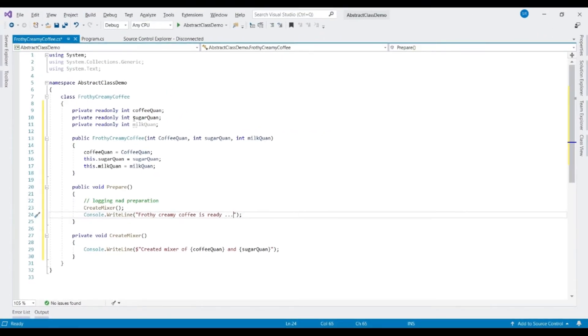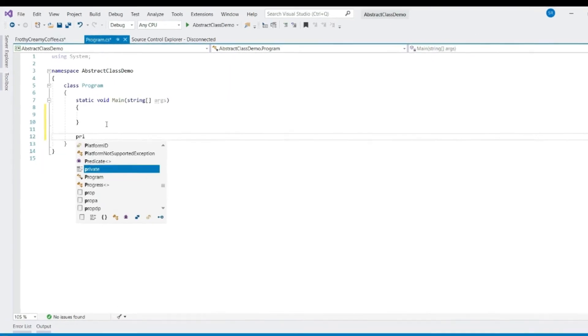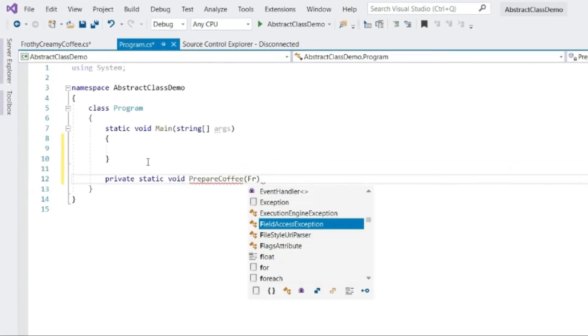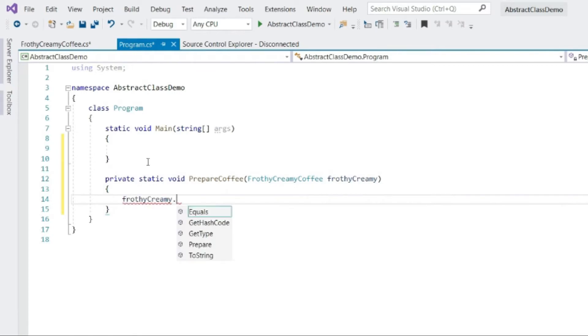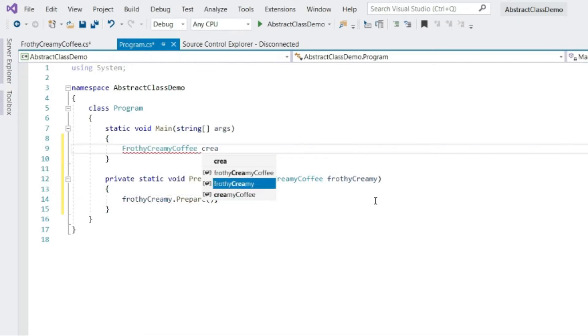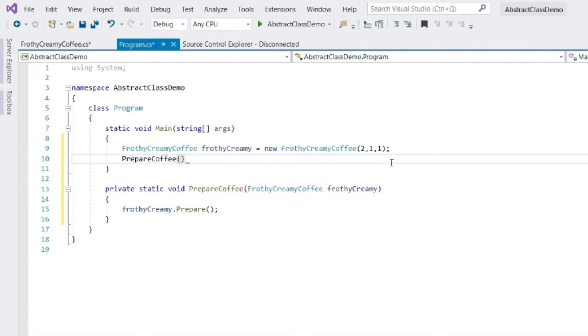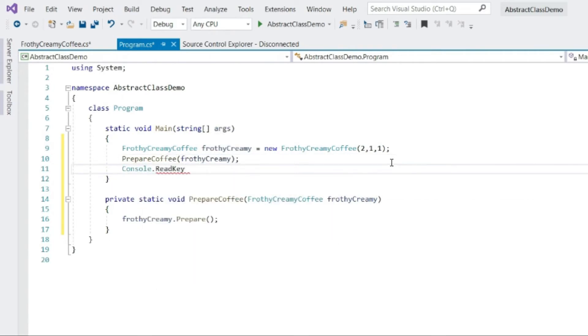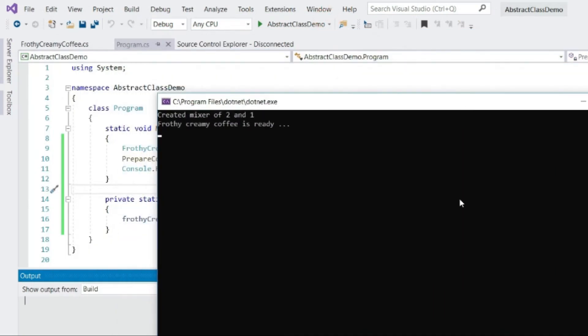This is a simple class with three properties which are used to prepare the coffee. Let's call this from our clientProgram.cs. So here we have created a private method, prepare coffee which takes the responsibility of calling prepare method of our frothy creamy coffee class. We are calling this method from our main method. Let's run this. Looks like our program prepares the frothy creamy coffee as per our expectation.